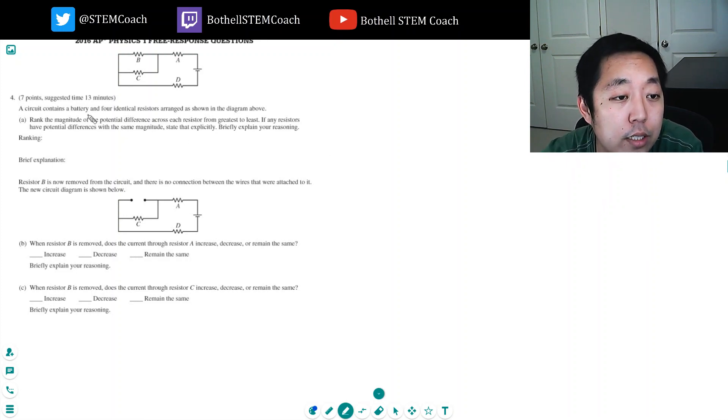A circuit contains a battery and 4 identical resistors arranged as shown in the diagram above. Rank the magnitude of the potential difference across each resistor from greatest to least. If any resistors have potential differences with the same magnitude, state that explicitly and briefly explain your reasoning.